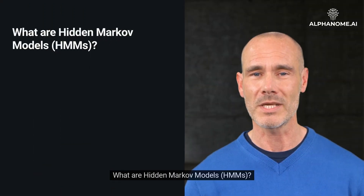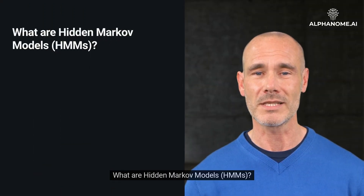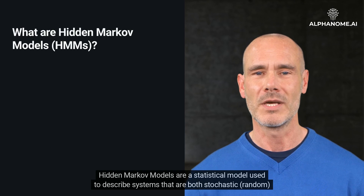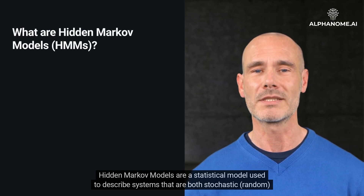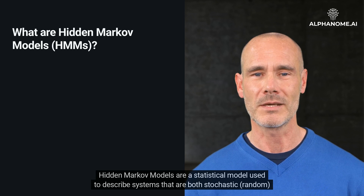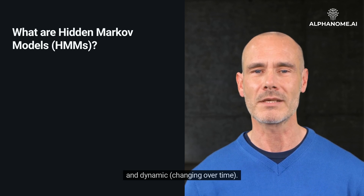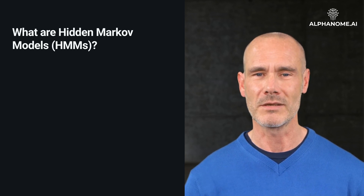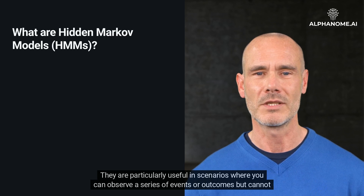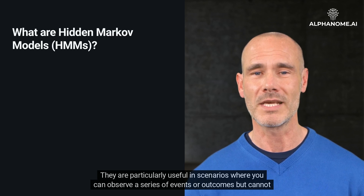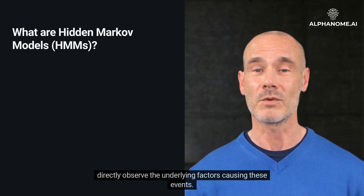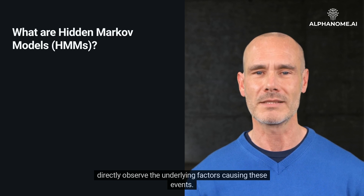What are Hidden Markov Models? Hidden Markov Models are a statistical model used to describe systems that are both stochastic — random — and dynamic, changing over time. They are particularly useful in scenarios where you can observe a series of events or outcomes but cannot directly observe the underlying factors causing these events.